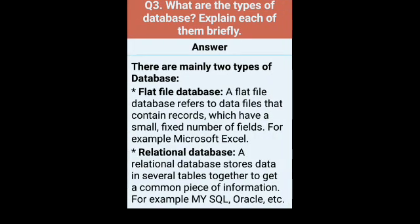The third question is: what are the types of databases? Explain each of them briefly. The answer is: there are mainly two types of databases — flat file database and relational database. A flat file database refers to data files that contain records which have a small fixed number of fields. For example, Microsoft Excel.